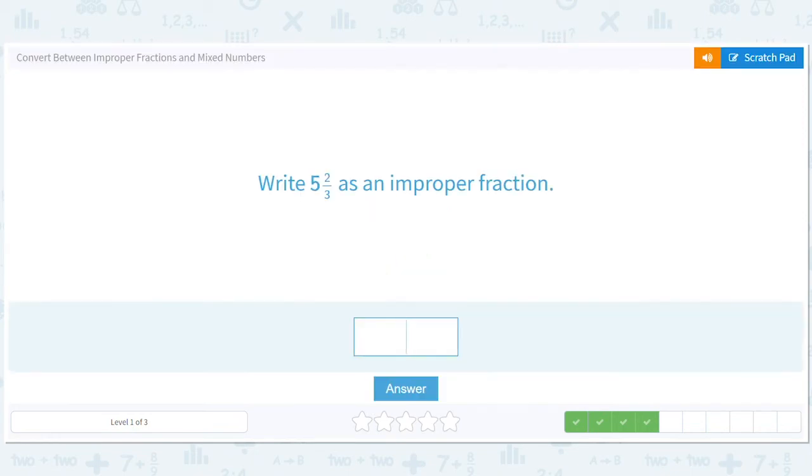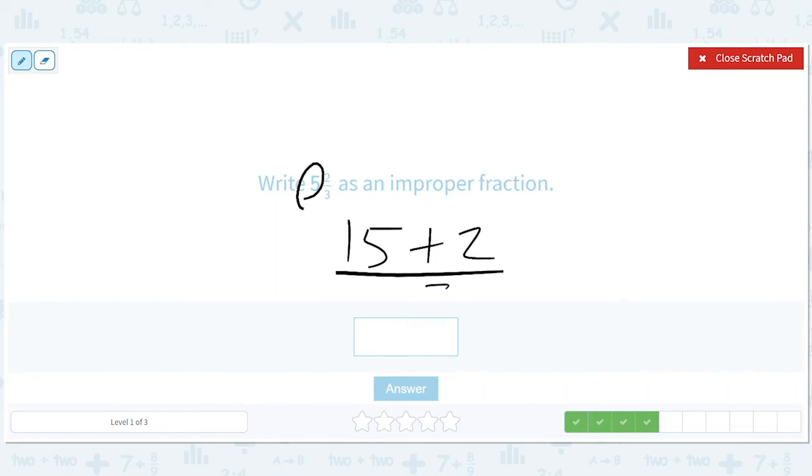Okay, so 5 wholes is 15 parts since they're thirds. 15 plus 2 divided by 3 is 17/3. So you take the 5 and the 3 and you multiply them. And you add the 2. And then you divide by the 3. So 17/3.